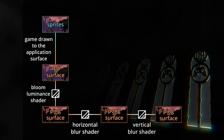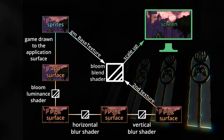Next is the second blur pass back to the ping surface, unless you want the bloom effect to go horizontally or vertically only. And then the final pass: we're going to draw the application surface scaled up to the screen using a blending shader, and pass the bloom surface into the shader as a second texture. Inside the shader, we will darken the color of the application surface, apply saturation to the bloom surface, and then add both together. And the final result will be a bloomed game.